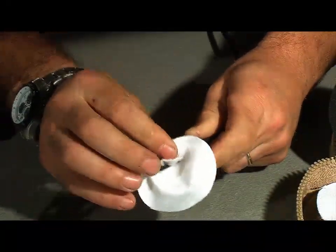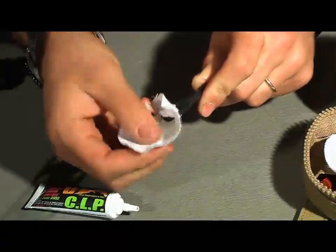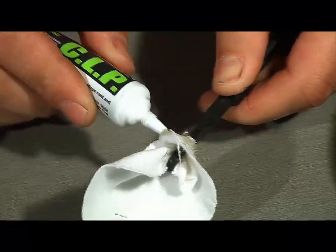That creates a swab that will give me 360 degrees inside my sniper barrel. You'll want to put a few drops of solvent on the front end of the patch.